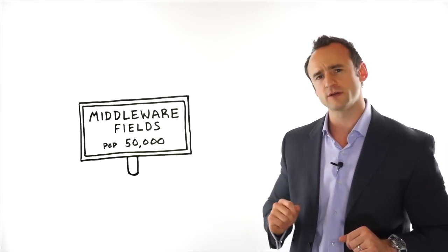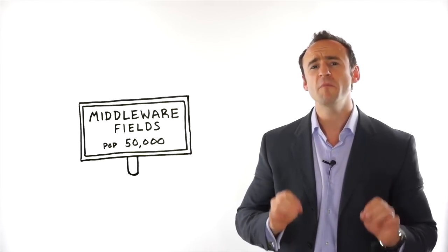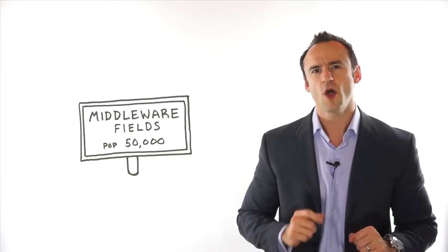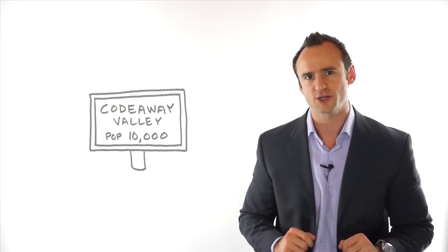To do this, we're going to look at two fictional communities. We'll look at the community of Middleware Fields, where Jim manages all the building maintenance and operations. We'll also look at Code Valley, where Bob manages all the building maintenance and operations.